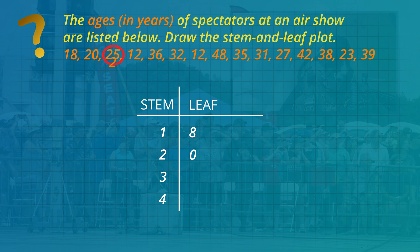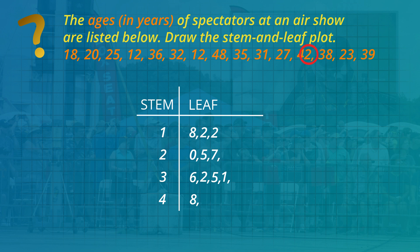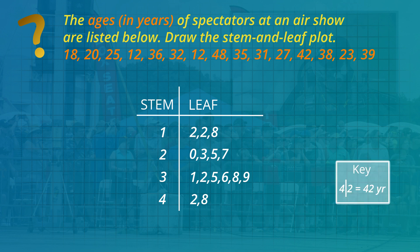Next is 25 — that's two in the stem and five in the leaf, and so on for the remaining values. The leaf numbers are then rearranged from smallest to largest. Finally, the key is an example to explain the graph: four and two separated by a line means 42 years of age.